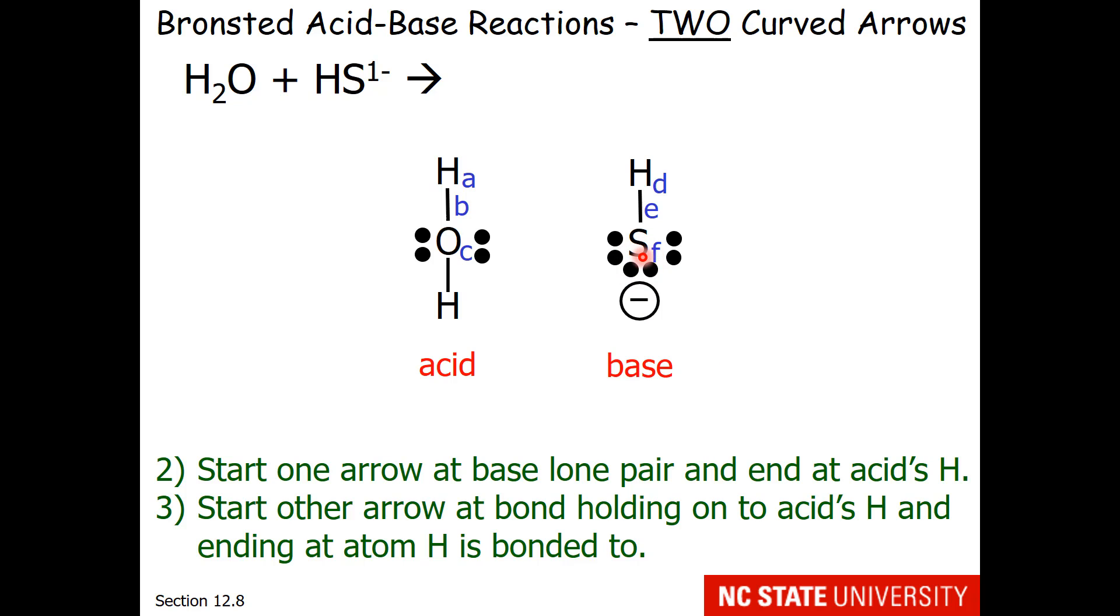So we're going to start one arrow at the base's lone pair and end it at the acid's hydrogen. So that means we start at F and we go to hydrogen A. This is our capture arrow. Then we start our other arrow at the bond holding on to the acid's hydrogen and ending at the atom the hydrogen is bonded to. So that means B going to C. That's our release arrow. So we should input F to A and B going to C.